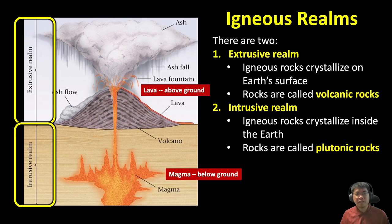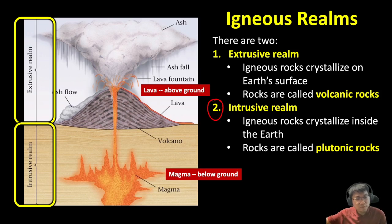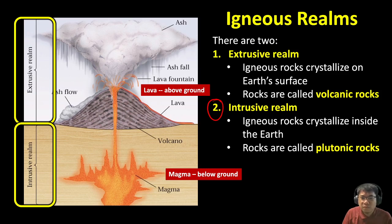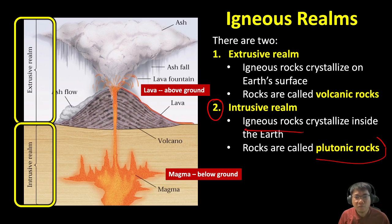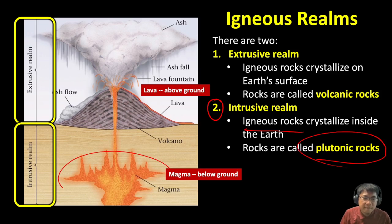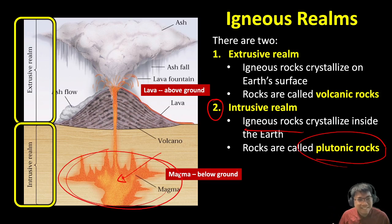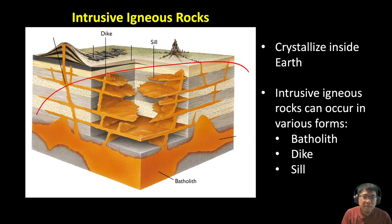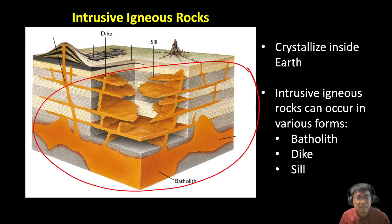Now, the second realm in igneous processes is called the intrusive realm. The extrusive realm is everything that forms above the surface; the intrusive realm involves igneous rocks that crystallize inside the earth. The types of rocks formed are called plutonic rocks. For example, a magma chamber — also hot molten material — can also cool down and solidify, and when it does, it becomes part of intrusive igneous rocks. These are the types of structures associated with intrusive igneous rocks.